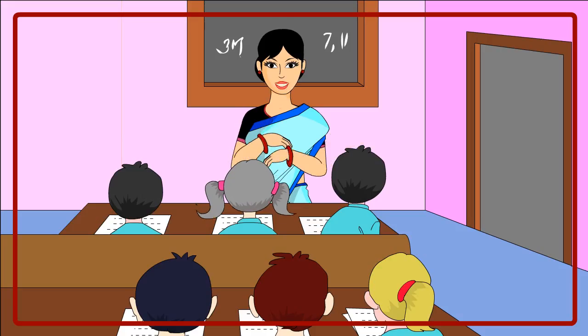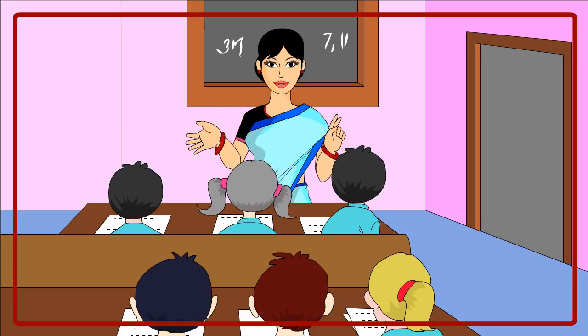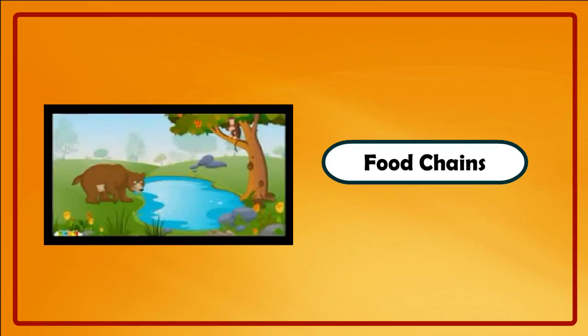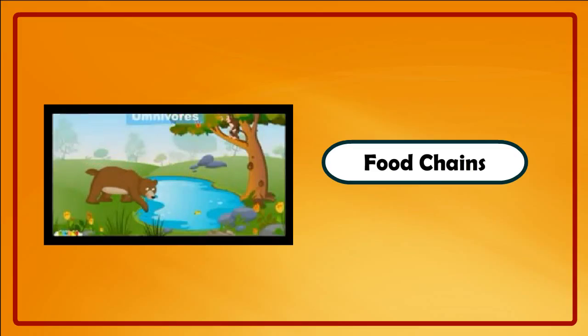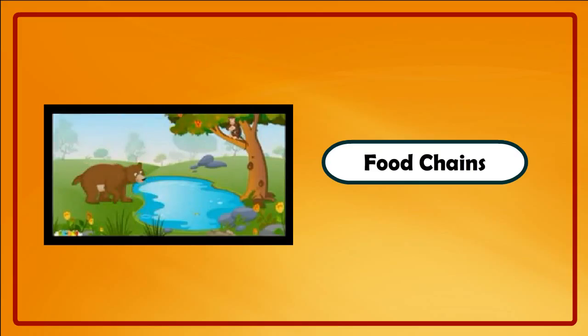And big fish are eaten by bear. When the bear dies, it decomposes and gives nutrients to plants. So all food chains start with green plants. All plant eaters are first consumers. Animals that eat the flesh of plant-eating animals are the second consumers. All food chains end with decomposers.